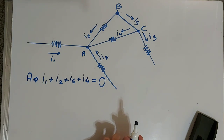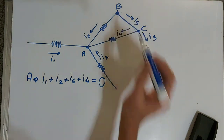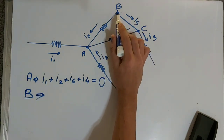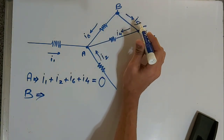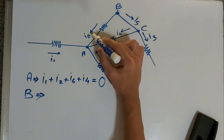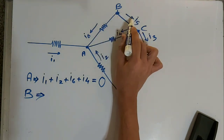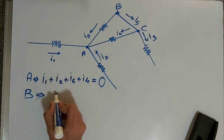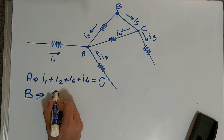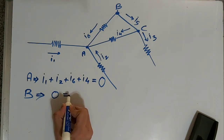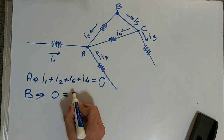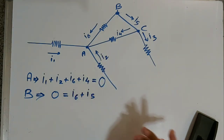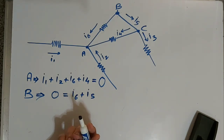Now let's solve the KCL equation for junction B. The current entering B should equal the current exiting B. In this case, I6 is exiting from B and I5 is also exiting from B, with nothing entering. So the current entering B is zero, equal to the current exiting: I6 plus I5. You can also write I6 plus I5 equal to zero.